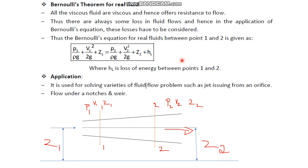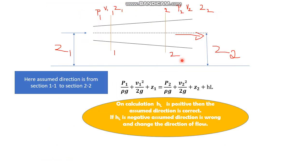This equation is used for fluid flow problems where we need to understand how much energy loss has occurred, or to determine the direction of flow. For example, in a pipe flow problem where fluid flows from section 1 to section 2: z1 is the elevation, p1 is the pressure, and v1 is the velocity at section 1-1, while p2, v2, and z2 are the respective values at section 2-2.